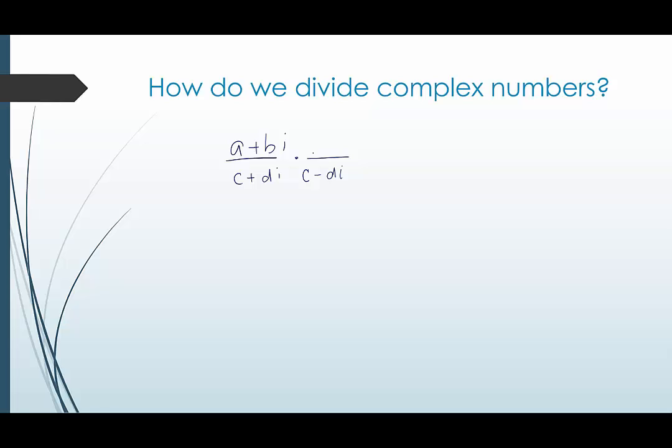Now the reason we do this is because when you multiply a number divided by itself that result is one. So we're not really changing the value of anything, we're just making it look a little different. And so what would happen here is you would have this product and you would multiply through in the numerator. And then the denominator would end up becoming real, we would end up with c squared plus d squared in the denominator.